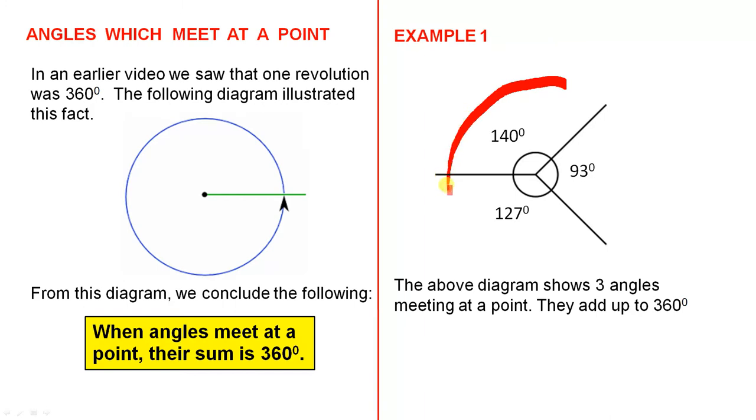When you take those three angles together and you add them up, you get one complete revolution, and we know that one complete revolution is 360 degrees. So, the above diagram shows three angles meeting at a point. They add up to 360 degrees.